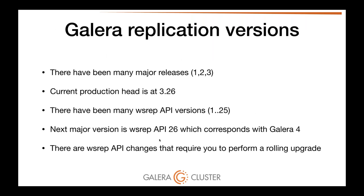There have been many major Galera releases — 1, 2, 3 — with current production head at 3.26. There have been many wsrep API versions as well: 1 through 25. API 26 corresponds to Galera 4, which is what you get today inside MariaDB 10.4. When wsrep API changes occur, you must perform a rolling upgrade of your entire system. The most common error we see in error logs is wsrep API mismatches — that's what you want to avoid.